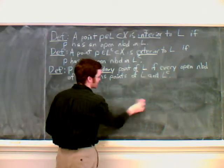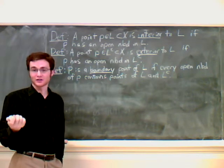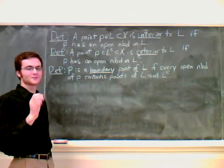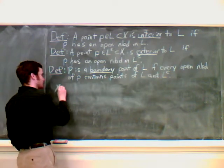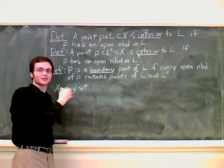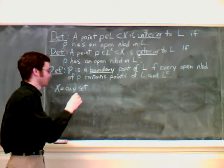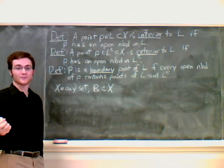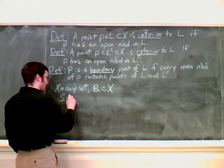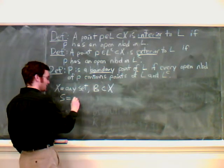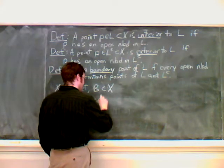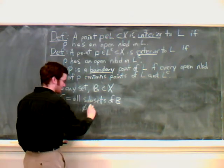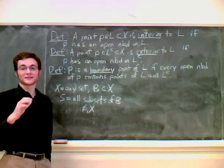We're going to continue working on the real line but use a different topology, the B topology. X is just some set. B will be a subset of X, whatever subset we choose to pick. Our topology S, our collection of open sets, will be all subsets of B, and also the empty set and all of X. Let's check if this is in fact a topology.